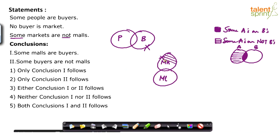Don't get confused — some markets are not malls does not mean that some markets are malls. You need to go back and refer to the syllogisms video for the basic concepts. The definite conclusion for 'some A's are not B's' — there is no definite conclusion. If some of you are thinking that some markets are not malls means some markets are malls, you are wrong. This overlapping region may not be there at all. What we have drawn is a basic diagram; let me also draw the possible diagram.